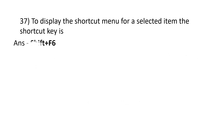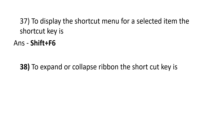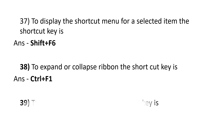To display the shortcut menu for a selected item, the shortcut key is Shift plus F10. To expand or collapse the ribbon, the shortcut key is Ctrl plus F1. To open the selection pane, the shortcut key is Alt plus F10.